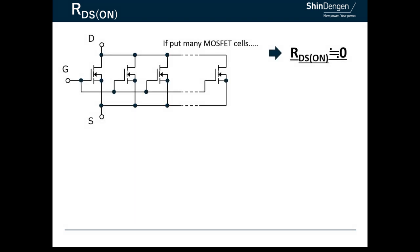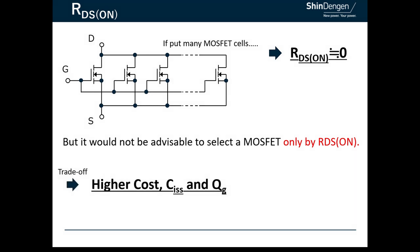As we have explained so far, a MOSFET consists of a collection of cells. The RDS(ON) will get closer to zero if the number of cells is increased, but it would not be advisable to select a MOSFET only by RDS(ON), because the trade-off for a greater number of cells is a higher cost and higher CISS and QG.